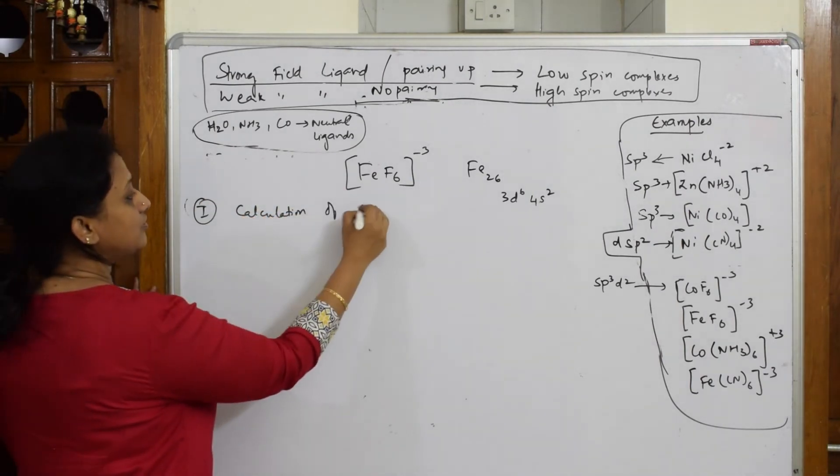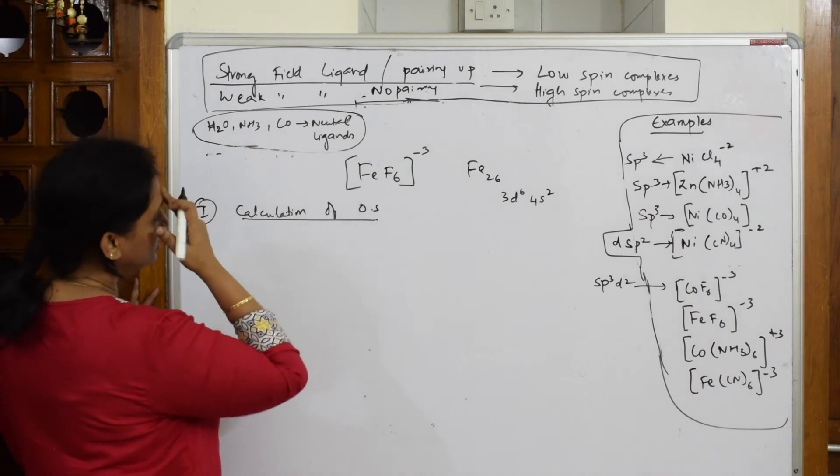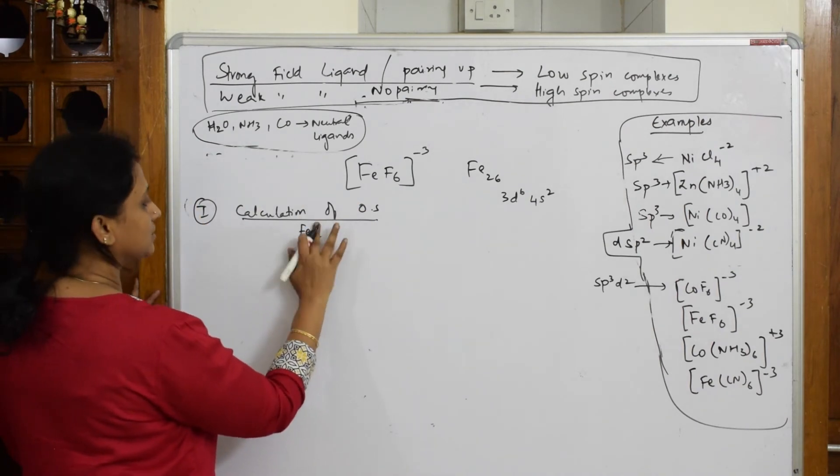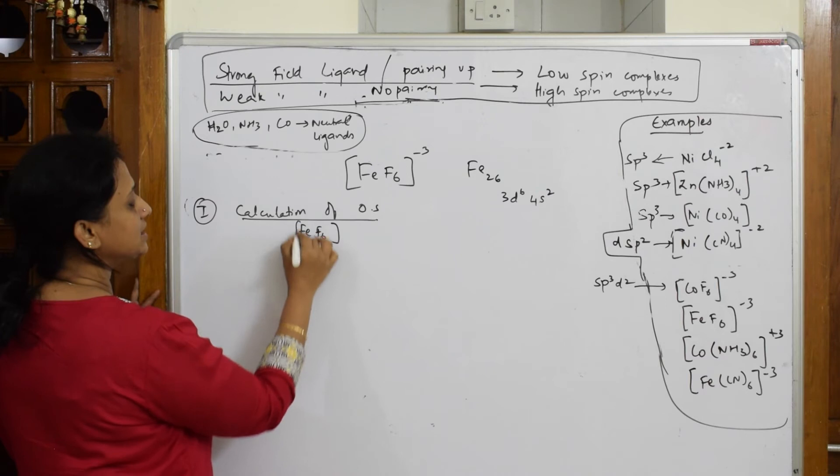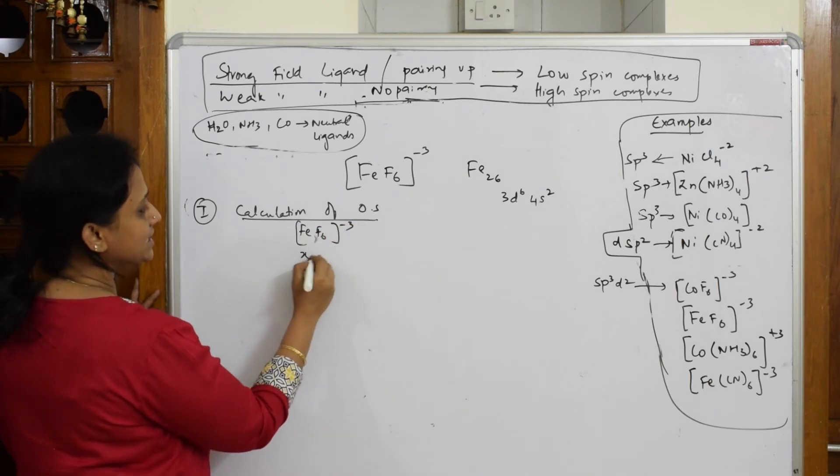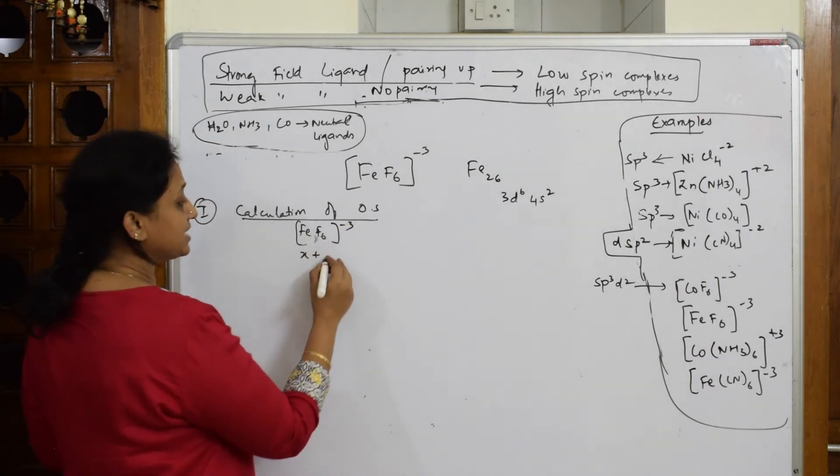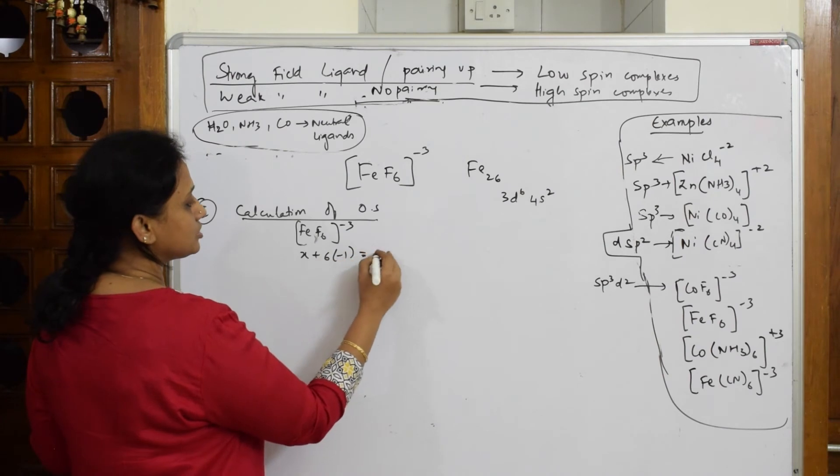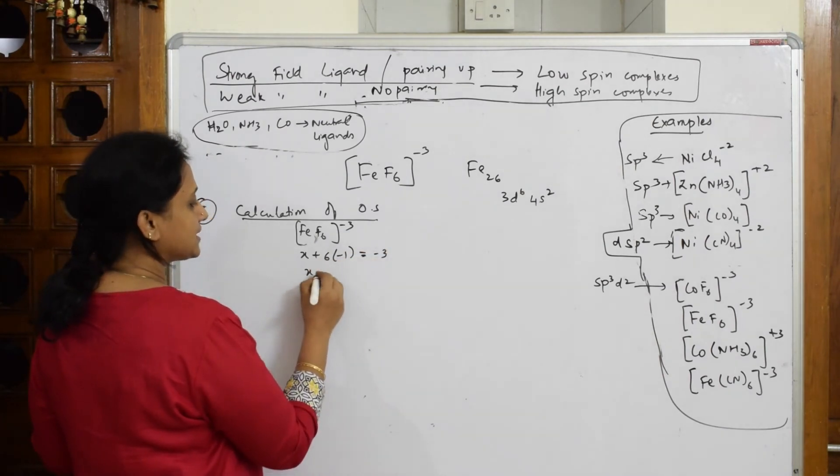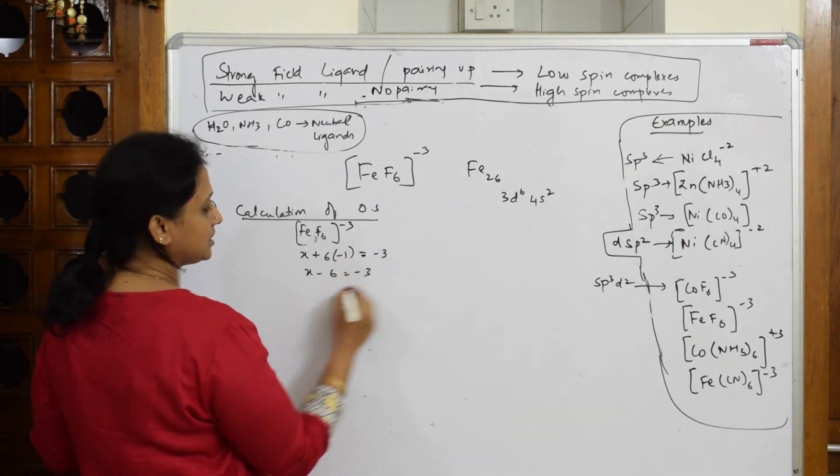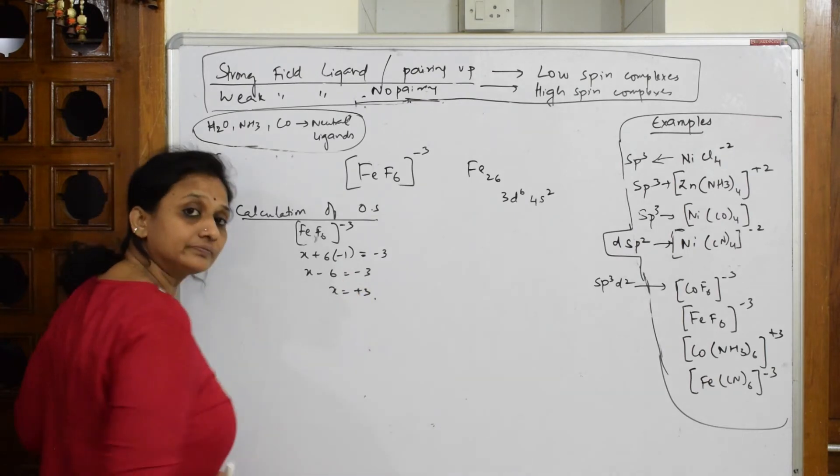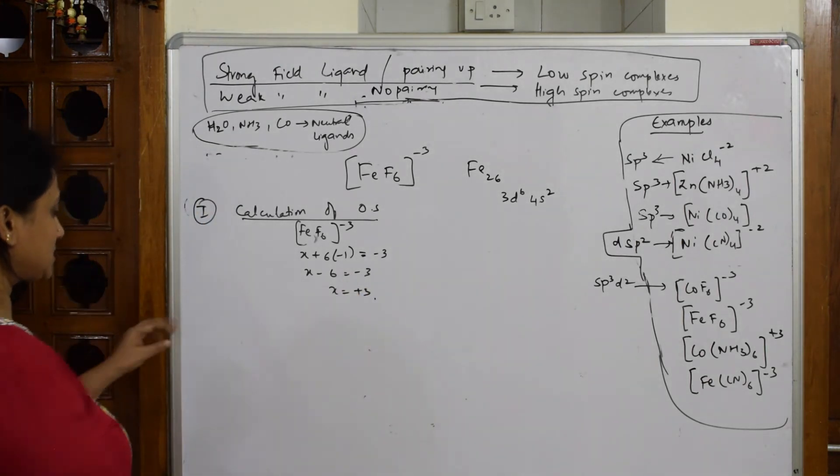Calculation of oxidation state. So FeF6 minus 3. This is X. Fluorine is minus 1. This equals minus 3. X minus 6 equals minus 3. X equals plus 3. Plus 3 is your oxidation state.